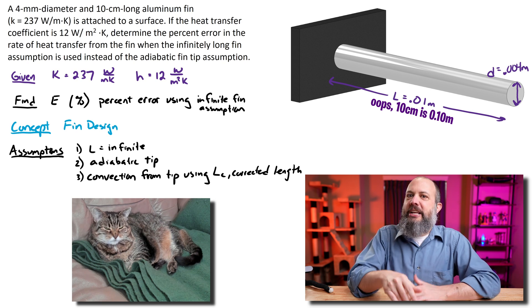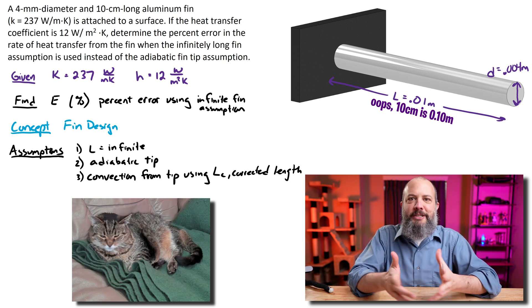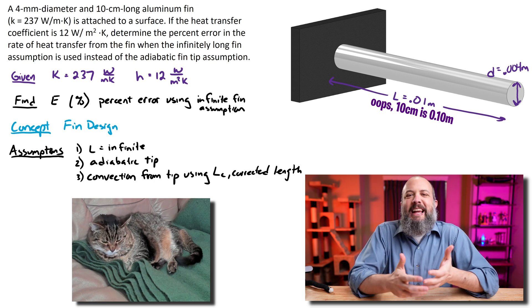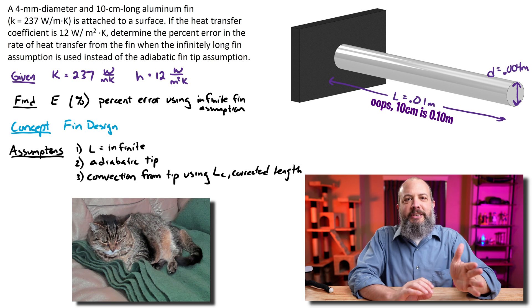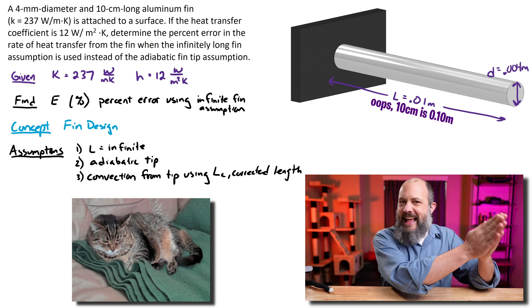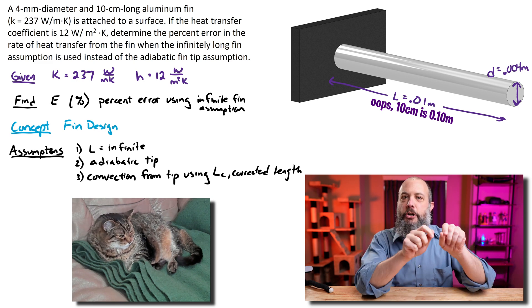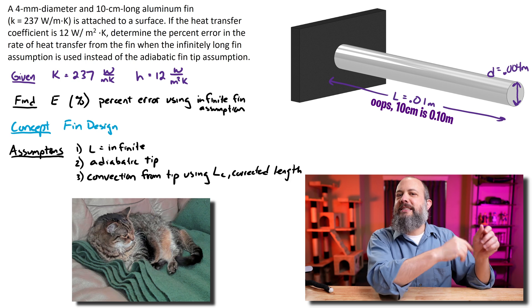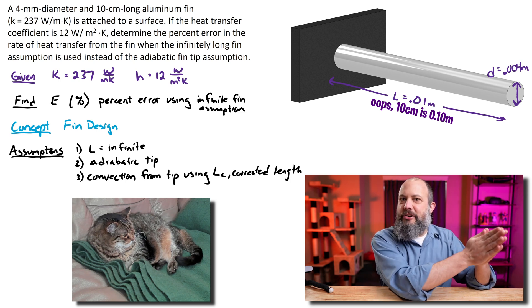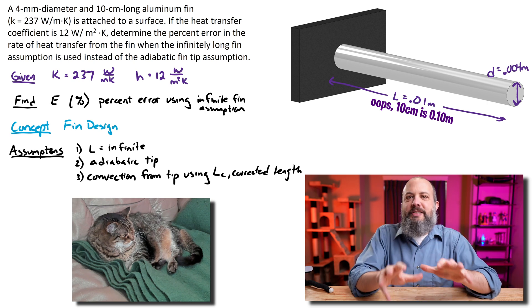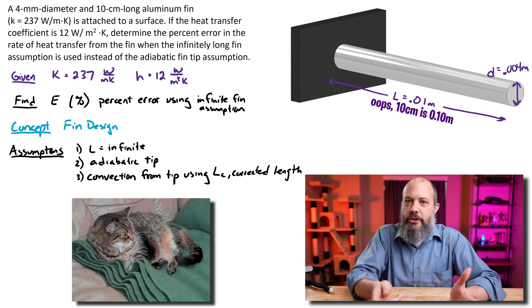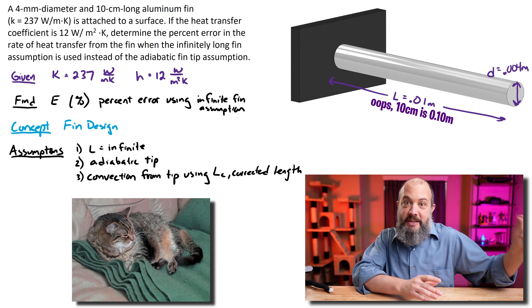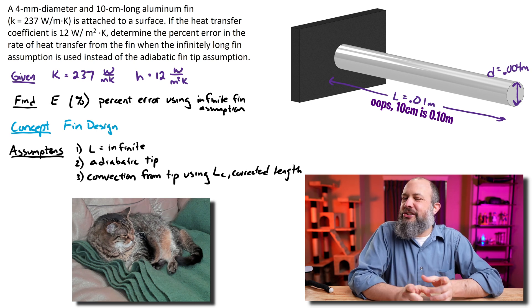The third assumption I'll make for this problem is not actually asked in this problem statement. I'm just adding it on as a bonus for your understanding. And that is to actually assume that there is convection from the tip. We're going to do this by using a corrected length, LC. What we're essentially going to be doing is figuring out how much surface area is on the end of the cylinder and equating that by making the cylinder a little bit longer, a corrected length, such that this extra length added has the same amount of surface area as the end of the tip, the circular area of the tip has. So this third assumption, using the corrected length, is usually the one you should use because it's going to be the most accurate. It accounts for the actual length and it accounts for heat transfer from the tip. And I think you'll see in this problem that it's not actually that much more complicated.